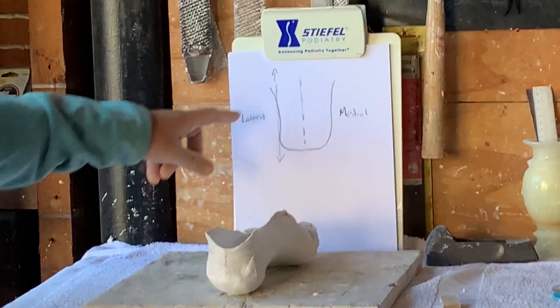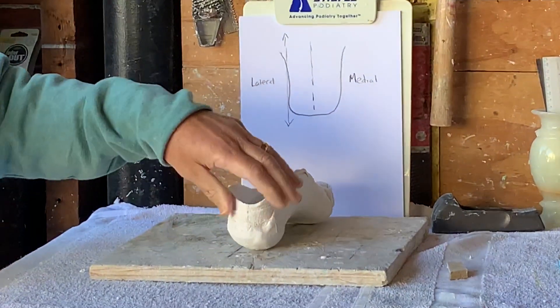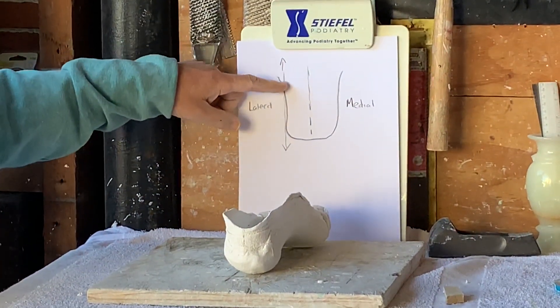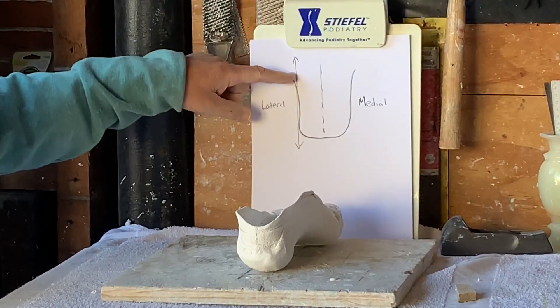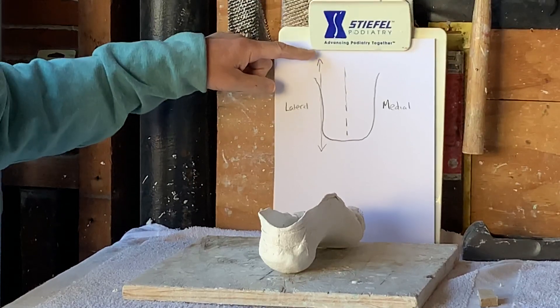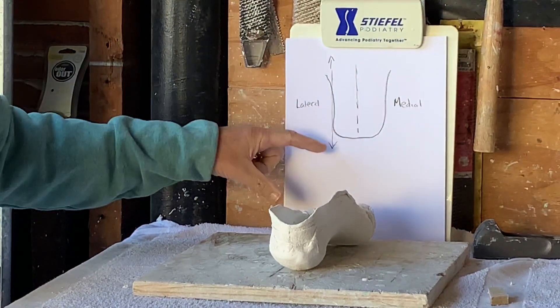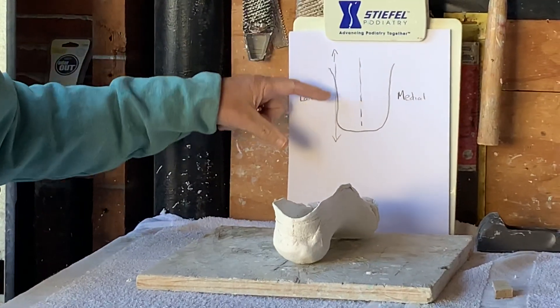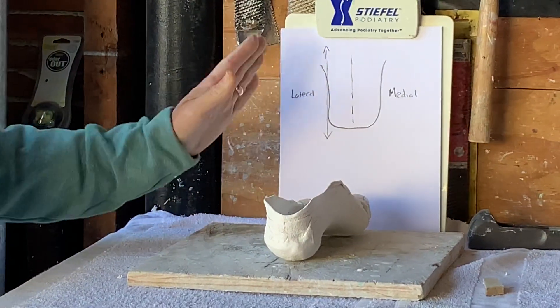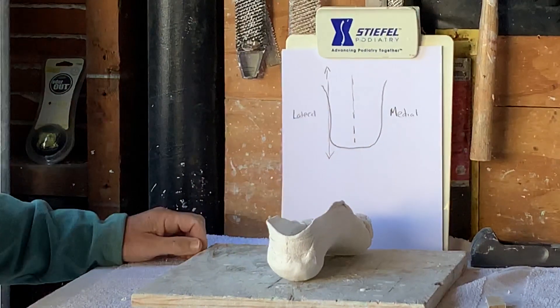So when we're looking at the back part of the heel, you'll find a curve along this lateral side. You want to line that curve up, actually a tangent through that curve, so it's perpendicular to the supporting surface.